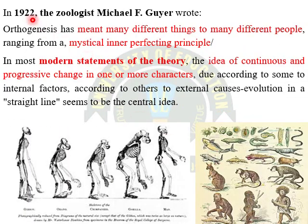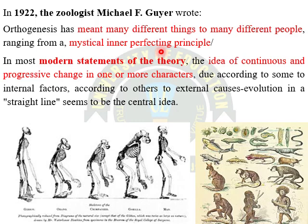Dear students, in 1922 Michael Goyer wrote about orthogenesis. He wrote that orthogenesis has meant many different things to many different people, ranging from a mysterious inner perfecting principle to merely a general trend in development due to the natural constitutional restrictions of the germinal material. In the most modern statement of the theory, the idea of continuous and progressive changes in one or more characters due to internal factors.